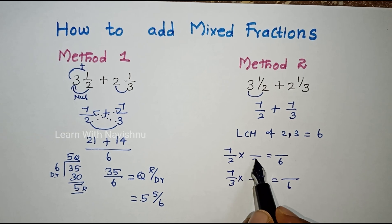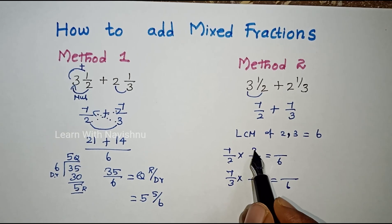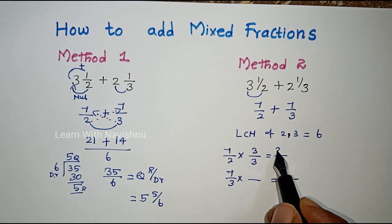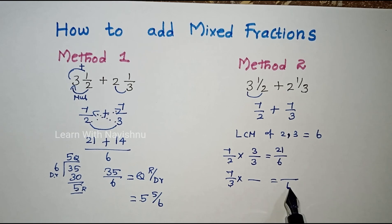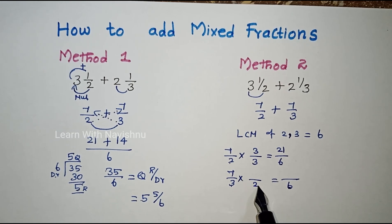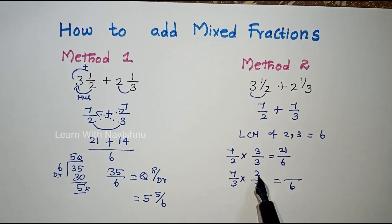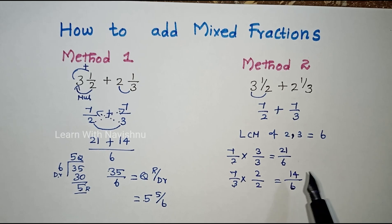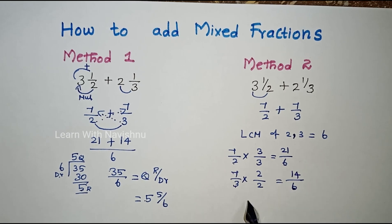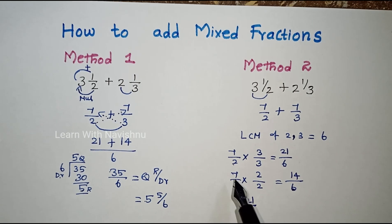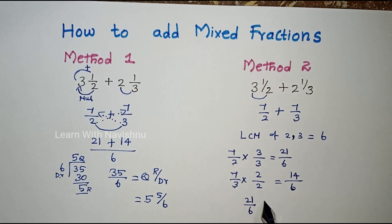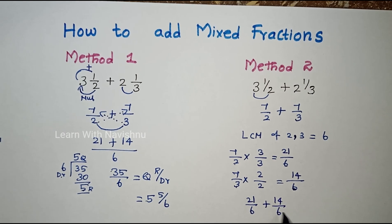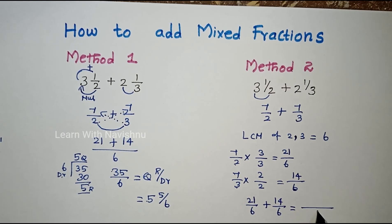For the first fraction with denominator 2, multiply by 3 to get 6. So 7 times 3 is 21. For the second fraction with denominator 3, multiply by 2. So 7 times 2 is 14. Now both fractions have denominator 6: 21/6 plus 14/6.